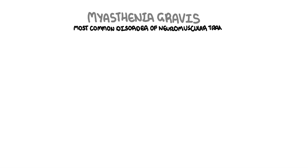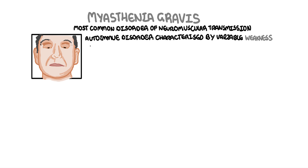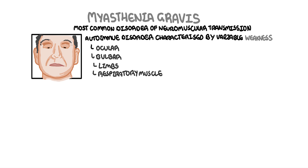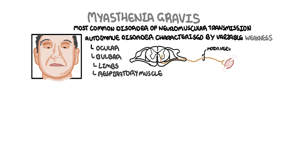Myasthenia gravis is the most common disorder of neuromuscular transmission. It is an autoimmune disorder characterized by variable weakness involving the eyes, bulbar muscles, the limbs, and the respiratory muscles. The classic presentation is a fluctuating weakness that is more prominent in the afternoon. The autoimmune attack occurs at the communication between the motor nerve and the skeletal muscles — this area is called the neuromuscular junction.